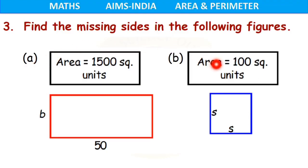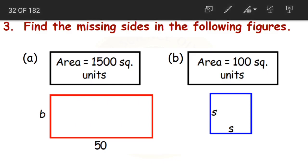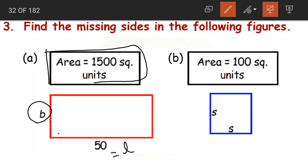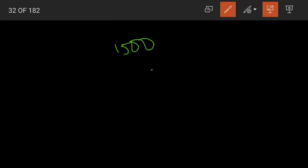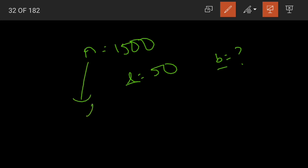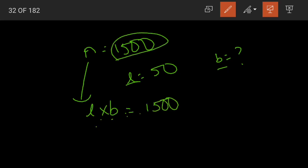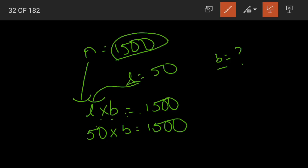Now, find the missing sides in the following figures. The area and one side are given; we need to find the other side. For question 1: area is 1,500 square units and length is 50 units. Area of rectangle equals length into breadth. So 50 into B equals 1,500. Therefore B equals 1,500 divided by 50.